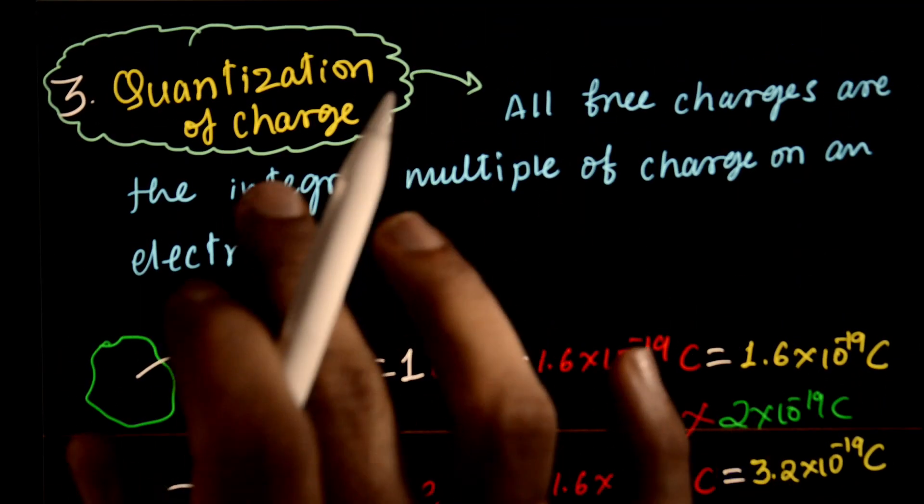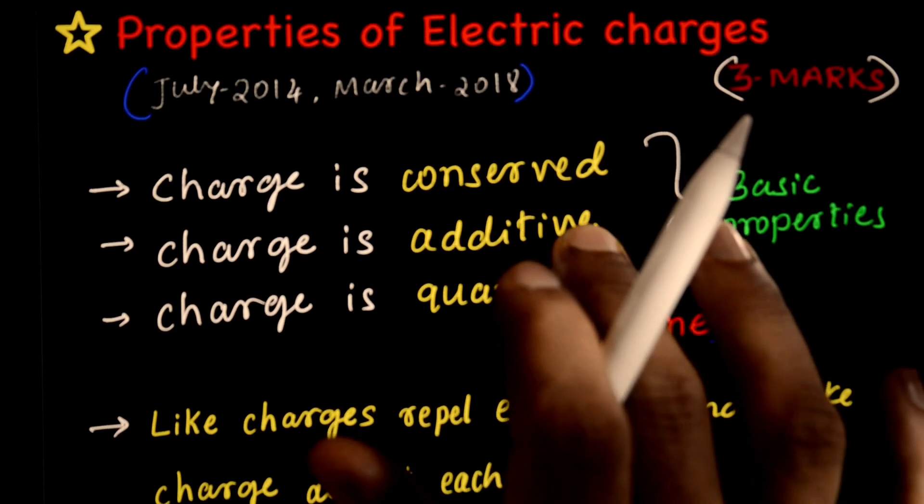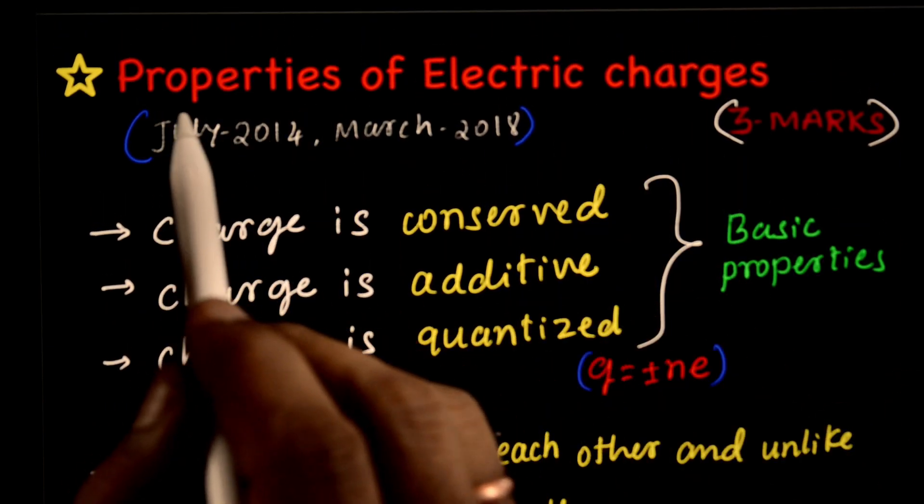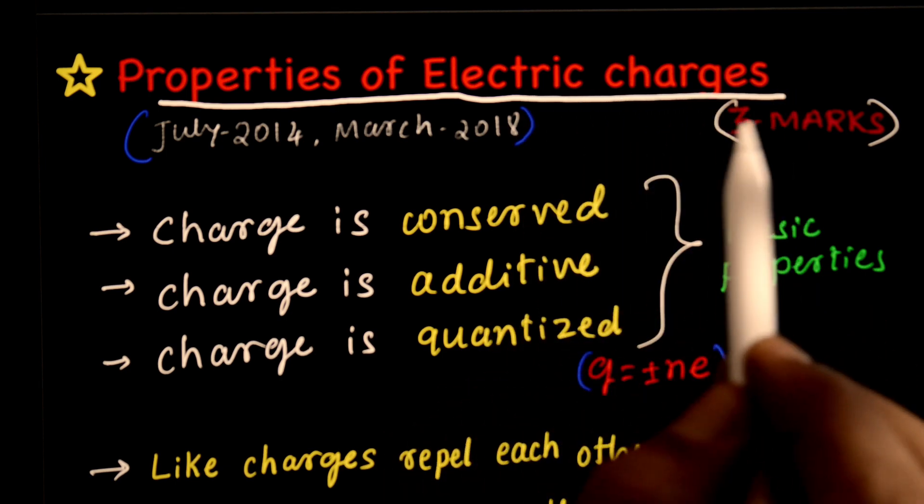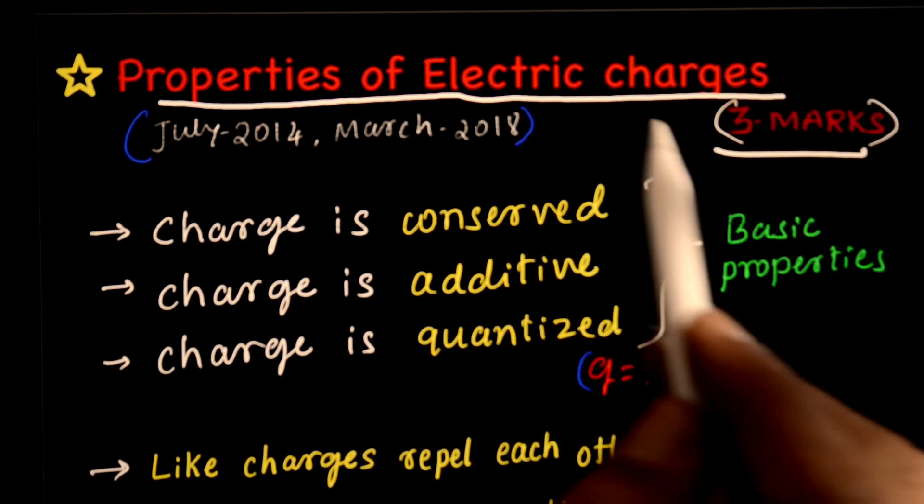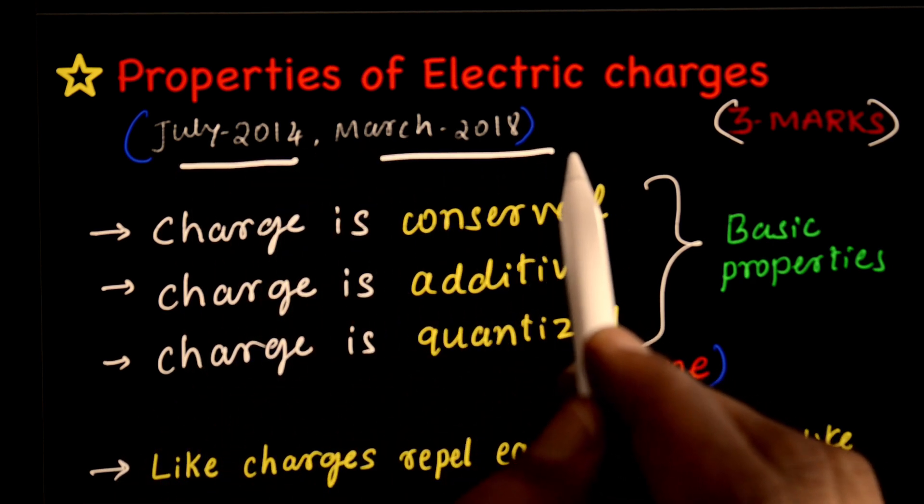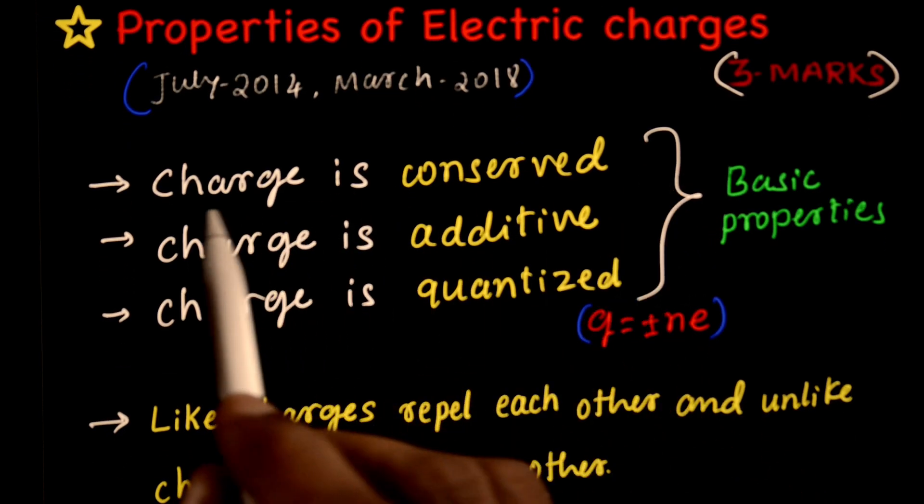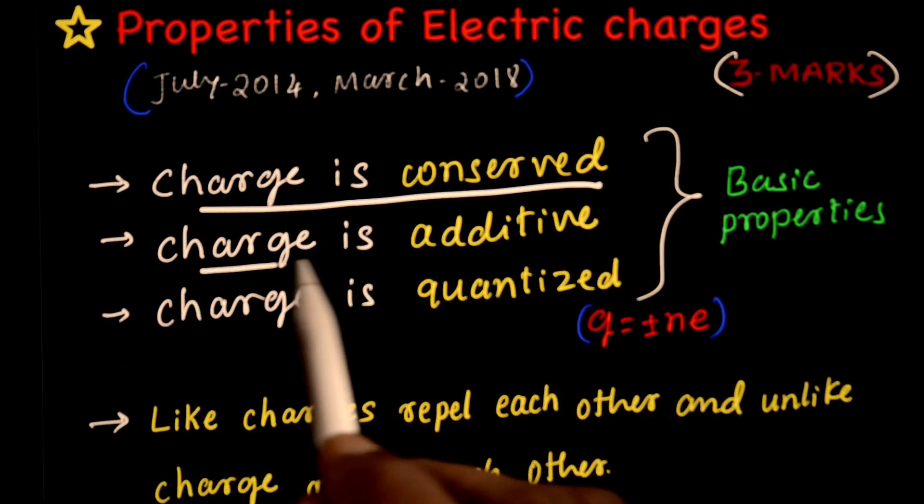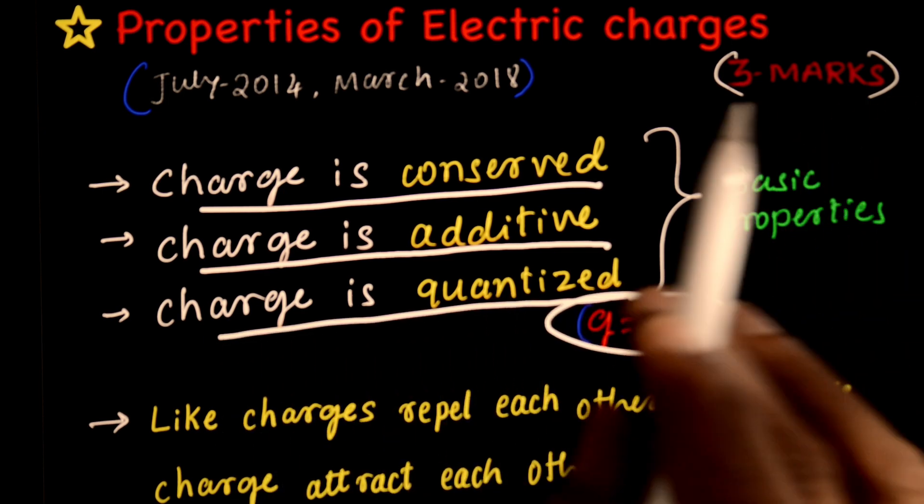Quantization of charge, Q equals nE, is a 3 mark question. This is enough. You may get a question: Write the properties of electric charges. This is a 3 mark or 2 mark question. In previous years, from July 2014 to March 2020, this has been asked.